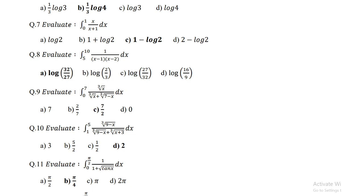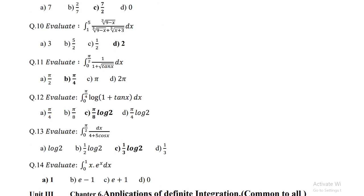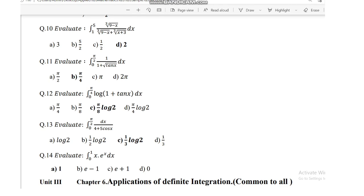Question number 9: evaluate integration of 0 to 7 of cube root of x upon (cube root of x plus cube root of (7 minus x)) dx, and the answer is 7 by 2. Question number 10: integration of 1 to 5 of cube root of (9 minus x) upon (cube root of (9 minus x) plus cube root of (x plus 3)) dx, and the answer is 2.